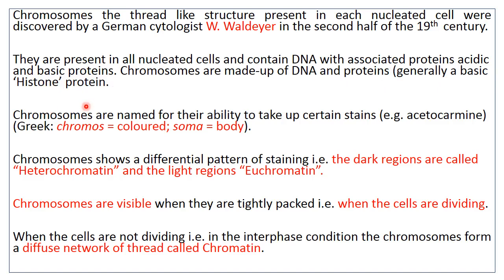The term 'chromosome' indicates that these thread-like structures can become colored or stained through certain dyes. An example of a dye used to stain chromosomes is Acetocarmin. These thread-like structures become colored — that's why they are called Chroma, meaning colored, and Soma meaning body: a colored body present inside the nucleus.